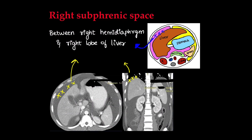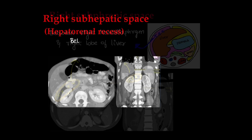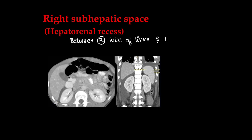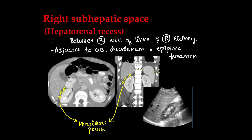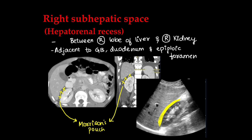The right subphrenic space is between the right hemidiaphragm and the right lobe of the liver — that is, it lies below the right hemidiaphragm. The right subhepatic space is below the right lobe of the liver, between the right lobe of the liver and the right kidney, adjacent to the gallbladder, duodenum and epiploic foramen. It is also known as the hepato-renal recess or Morrison's pouch, visible on axial, coronal and ultrasound images.